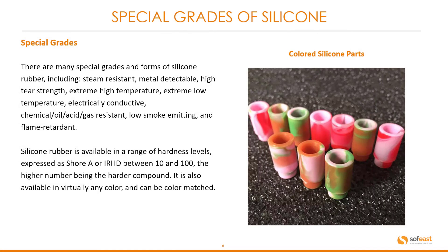There are many special grades and forms of silicone rubber, including steam resistant, metal detectable, high tear strength, extreme high temperature, extreme low temperature, electrically conductive, chemical, oil, acid, or gas resistant, low smoke emitting, and flame retardant. Silicone rubber is available in a range of hardness levels expressed as Shore A or IRHD between 10 and 100, with higher numbers indicating a harder compound. It is also available in virtually any color and can be color matched to your requirements.